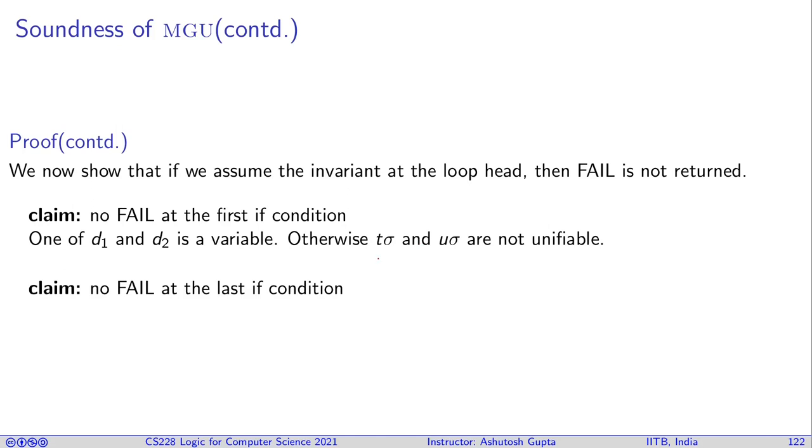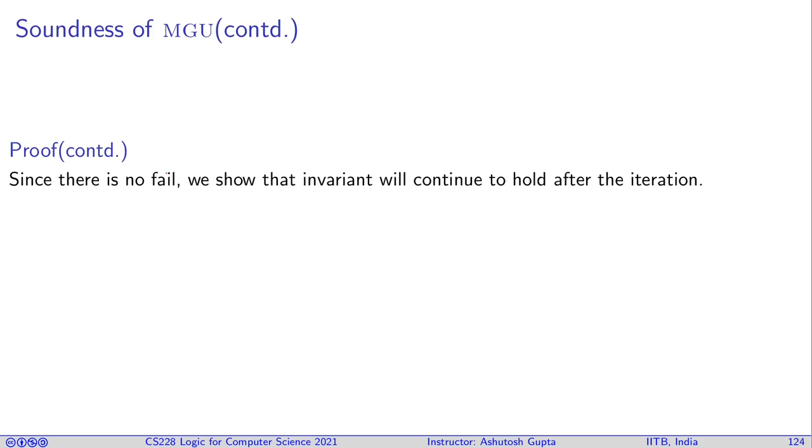And what about the last if condition? Can we return fail there? That is also not possible. Since we know that x tau equals s tau, x cannot occur in s. Otherwise no unifier can make them equal. This equality is not even possible. There is no tau possible if x occurs in s. So therefore it doesn't happen and you don't get a fail.